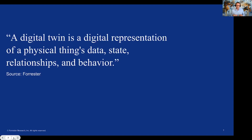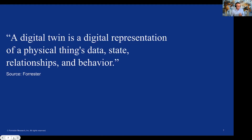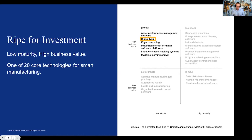So we've tried to clarify that a bit. Particularly from Forrester's perspective, as we look at a digital twin, this definition really does capture what we think one is: a digital representation of a physical thing's data, state, relationships, and behavior. That digital representation of a physical thing — that's the important piece here. And as we look across the space, having clarified what the digital twin is, we'll get deeper on that in just a moment.